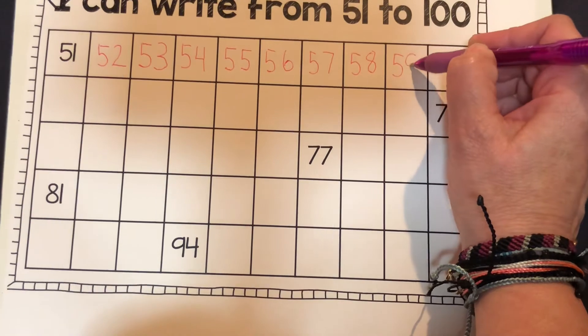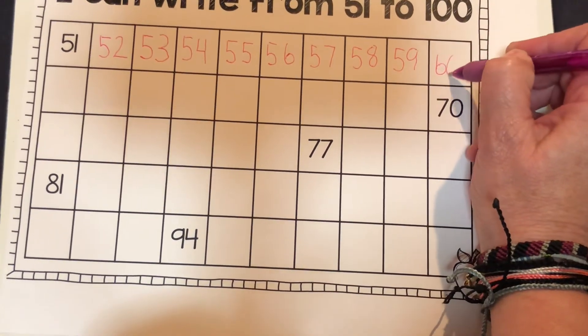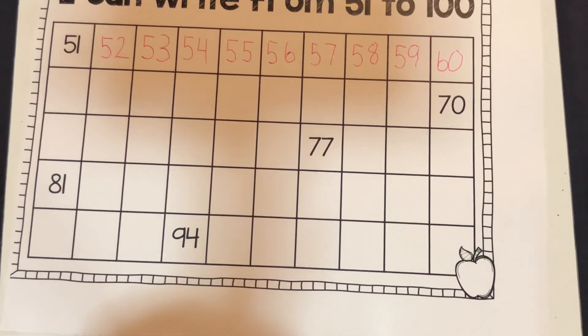A five and a nine. And after that comes 60, and you're just gonna keep going and write your numbers all the way to 100.